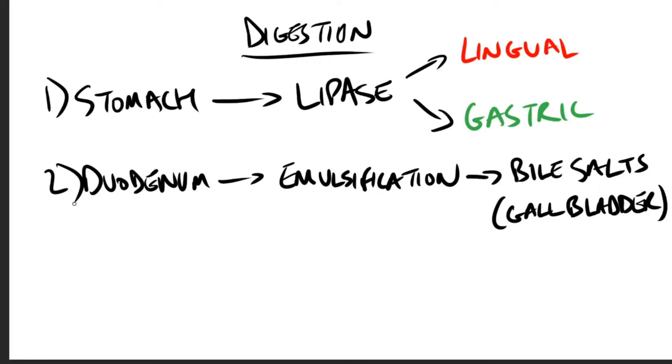by the liver and stored in the gallbladder, and the mechanical mixing due to peristalsis. Bile salts are the derivatives of cholesterol. Number three: TAG molecules are acted upon by an esterase, which is pancreatic lipase. The primary products are two monoacylglycerol and free fatty acids.